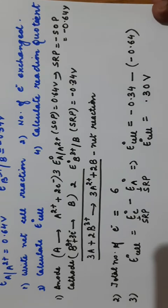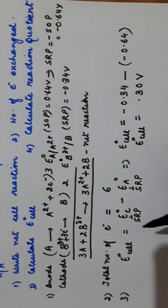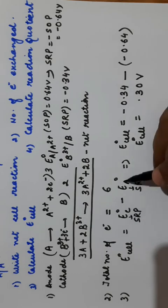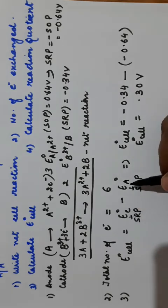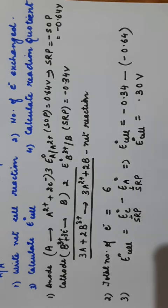So E naught cell comes out to be 0.30 volt. Remember, you have to put the standard reduction potentials of cathode as well as anode, because by convention it is taken as the standard value.